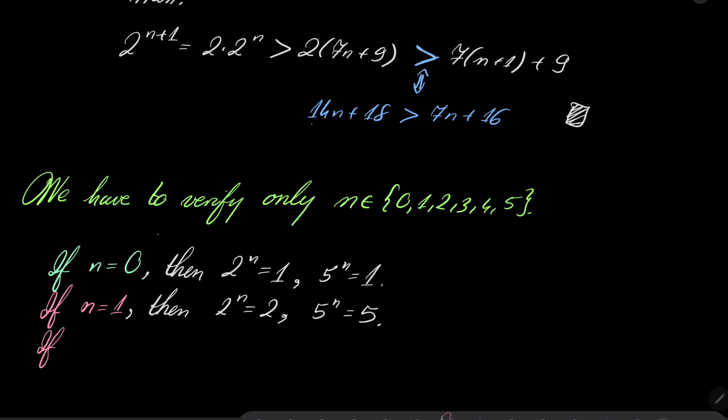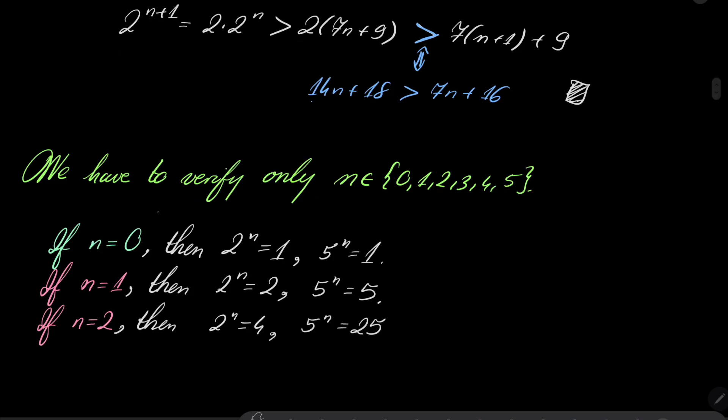If n equals 2, then 2 to the power of n is 4, 5 to the power of n is 25, 2 plus 5 is 7, 7 is not equal 4.